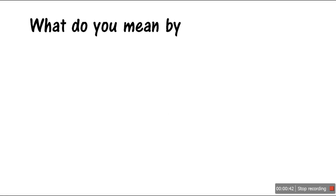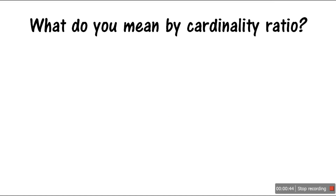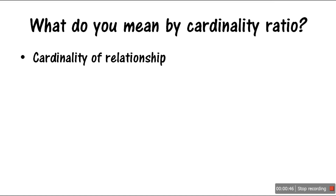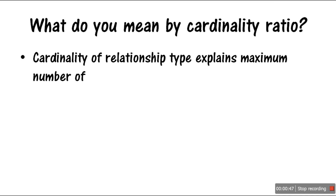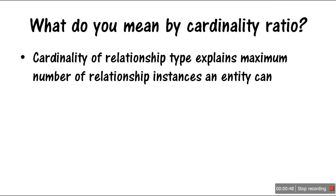First, the definition: cardinality of a relationship type explains the maximum number of relationship instances an entity can participate in. That is the definition of cardinality ratio.